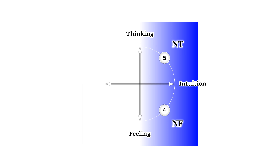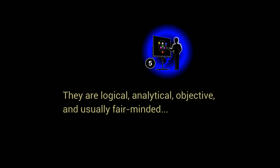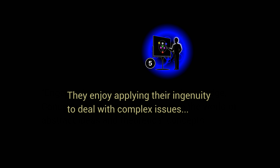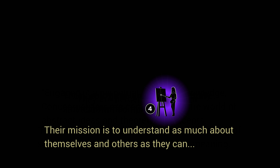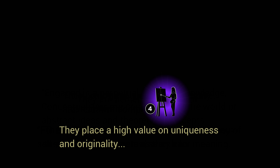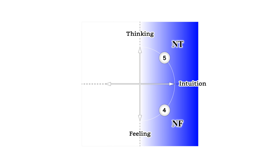These two temperaments are described by Paul Teeger and Barbara Teeger in the following way. Engaged in a perpetual quest for knowledge, conceptualizers are comfortable in the world of abstract ideas and theoretical concepts. They are logical, analytical, objective, and usually fair-minded. They enjoy applying their ingenuity to deal with complex issues, and are fiercely independent. On the other hand, for the philosophical idealists, life is a journey of self-discovery — a perpetual search for meaning. Their mission is to understand as much about themselves and others as they can. They place a high value on uniqueness and originality. Many idealists possess the soul of an artist. The combination of intuition and thinking is related to scientific invention and discovery, while the combination of intuition and feeling is related to artistic creation.